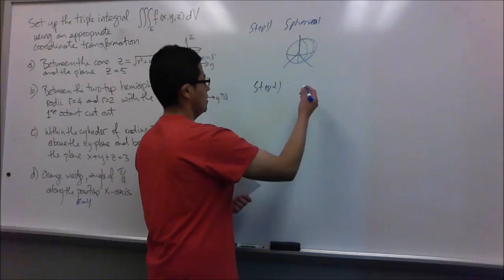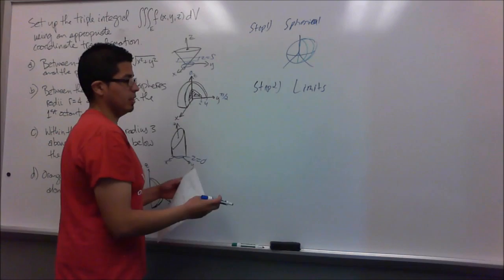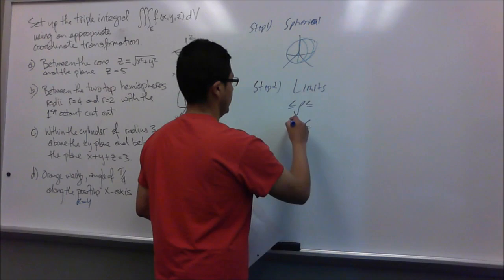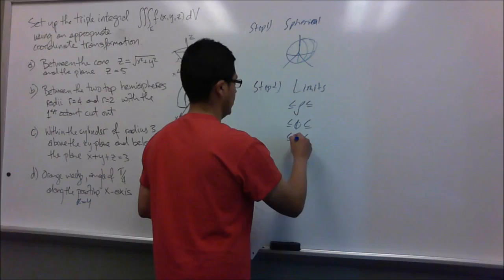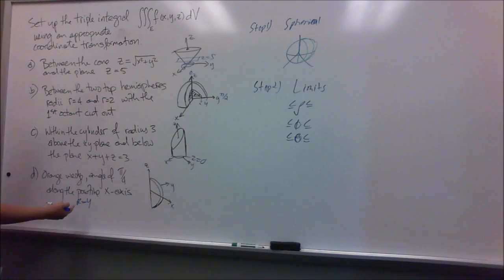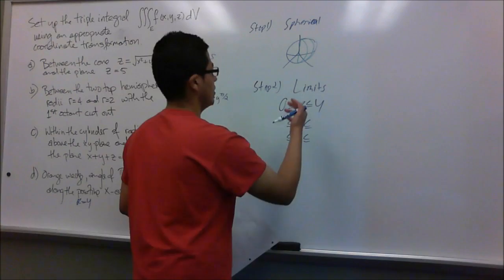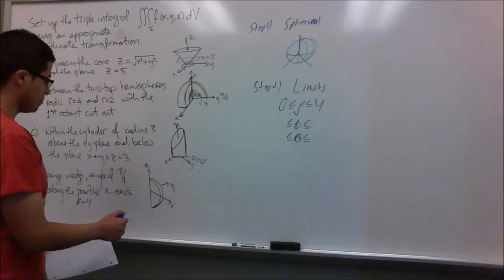Step two: I find my limits. Spherical coordinates rely on the limits of rho, phi, and theta. Our radius is just 4, so rho goes from 0 to 4, since rho in spherical coordinates represents the radius.